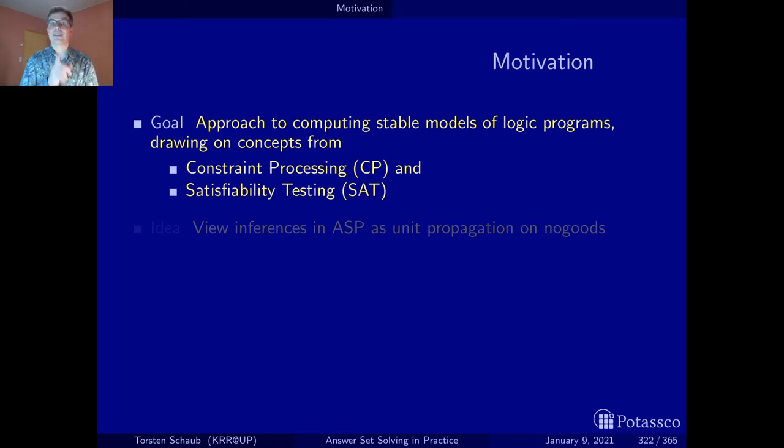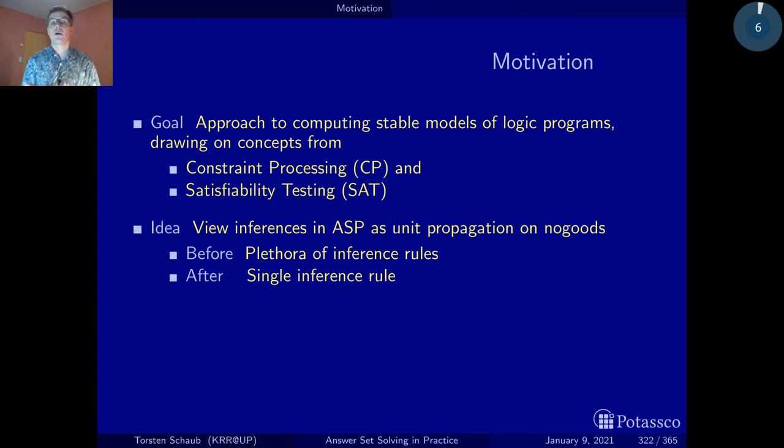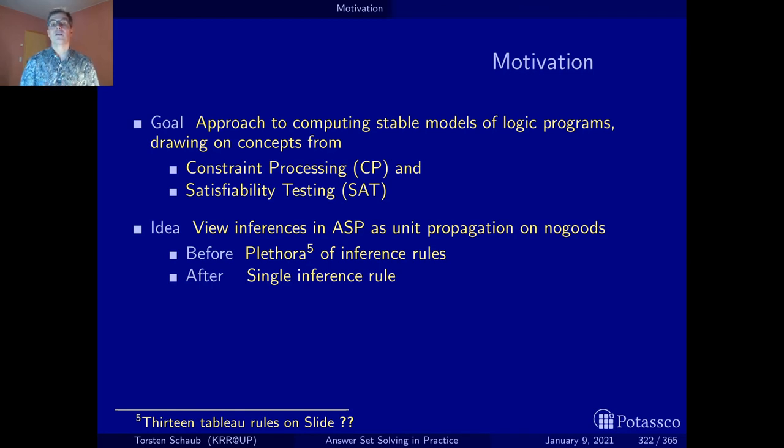So at the end of the day, that's the idea. We want to view inferences in ASP as unit propagation on no-goods. Unit propagation is the major inference rule in satisfiability solvers. However, here we want to use no-goods as a more general concept. Because after all, we are not really compiling into SAT, we are using or adapting the technology. So what does this buy us? What we had before is a plethora of inference rules. If you remember from the proof-theoretic characterization, the Tableau calculus that was capturing the inferences in ASP solvers consisted of 13 inference rules. While once we do this manipulation by compiling inferences into no-goods, we get a simple flat data structure and we have two inference rules, unit propagation and case analysis. So this is really the big boost that this gives us.